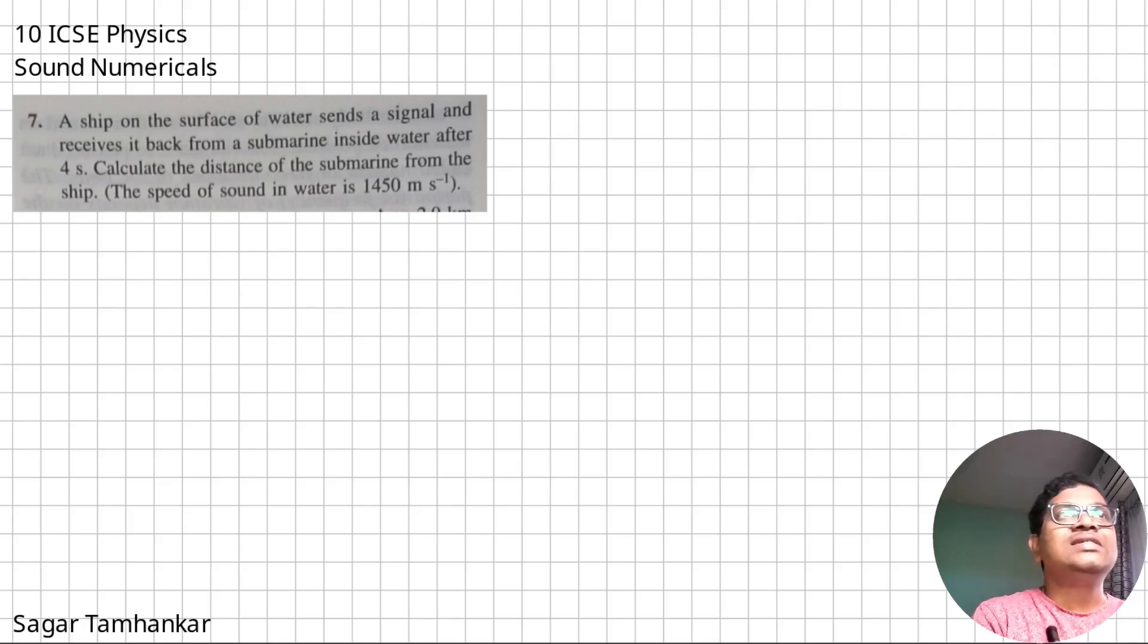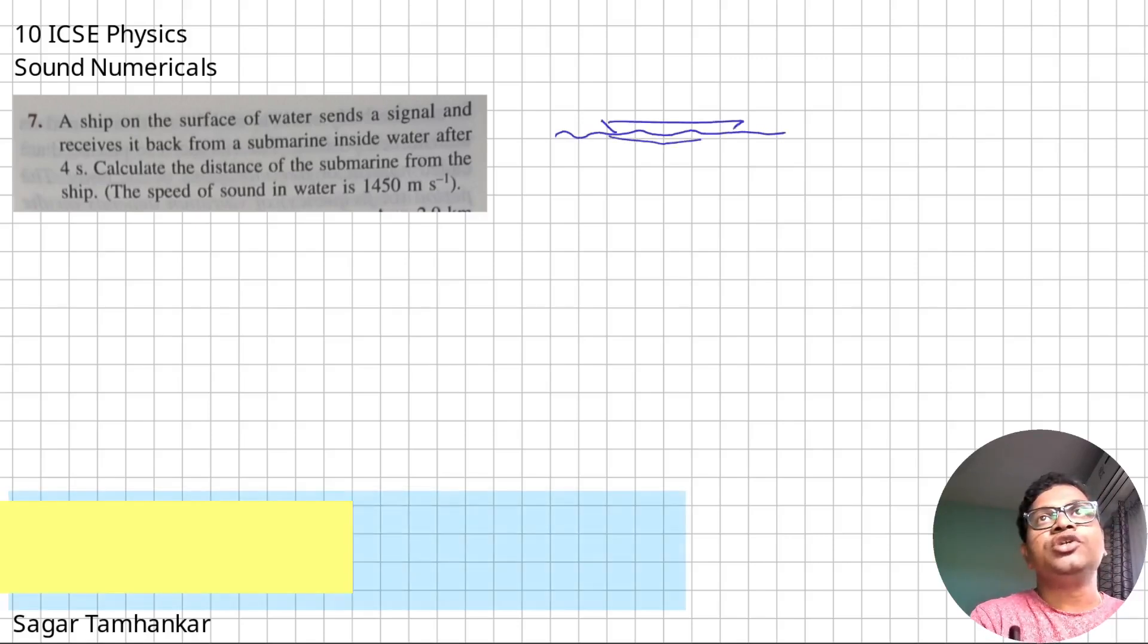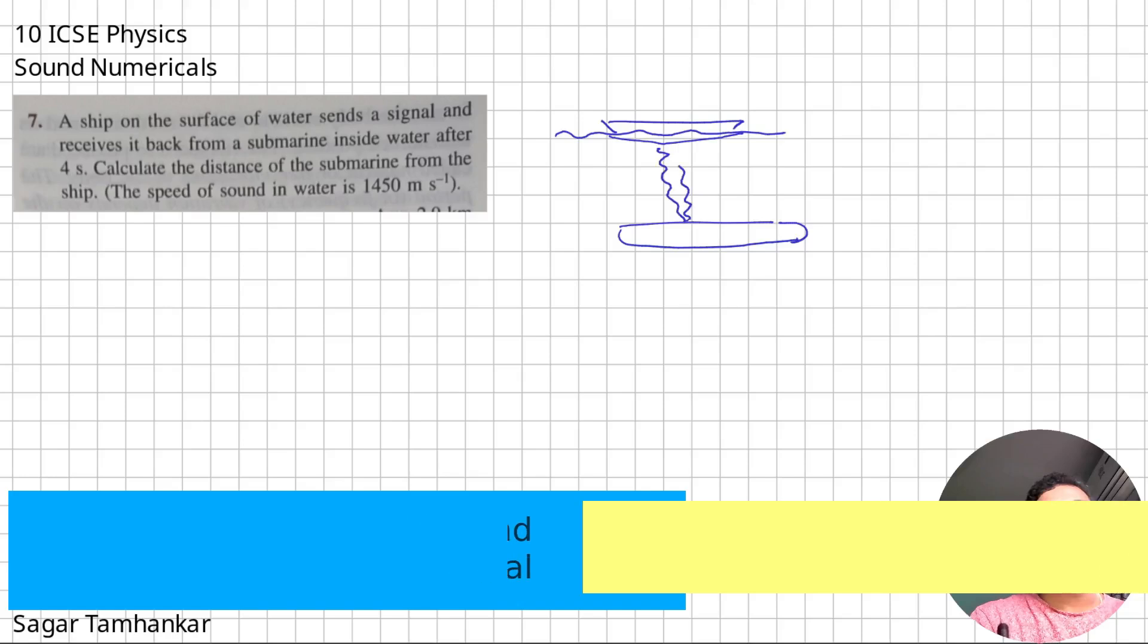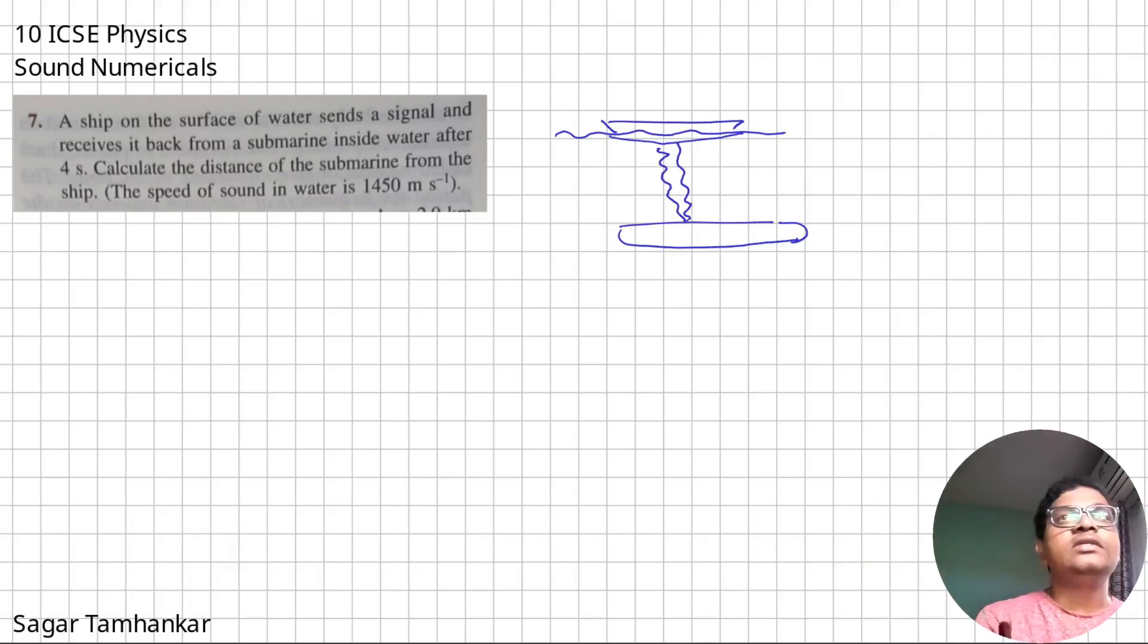A ship on the surface of water sends a signal and receives it back from a submarine inside water after 4 seconds. So this is a ship, there will be a submarine inside, so a signal is sent and returned back. It takes 4 seconds.